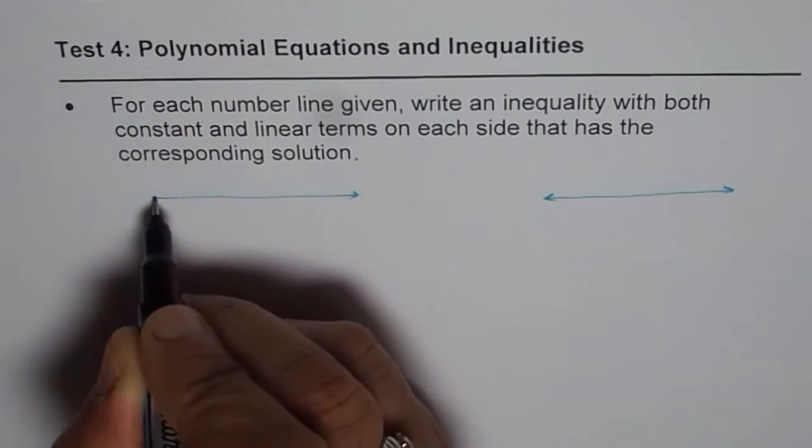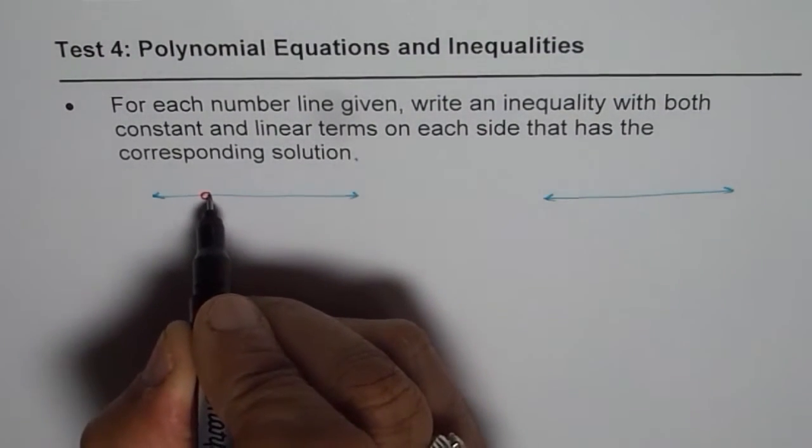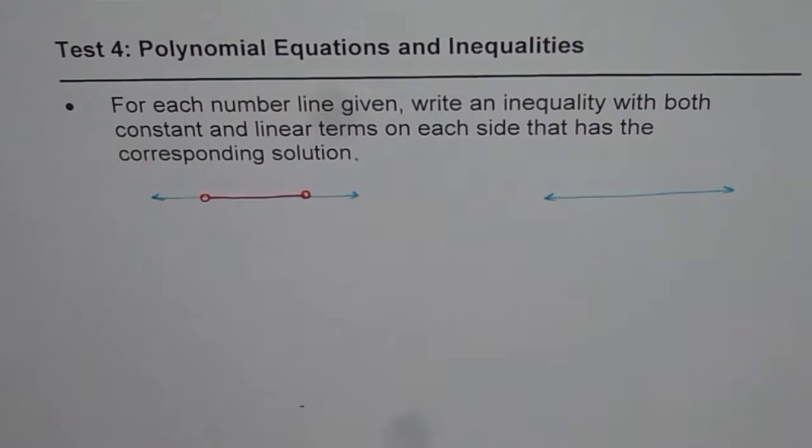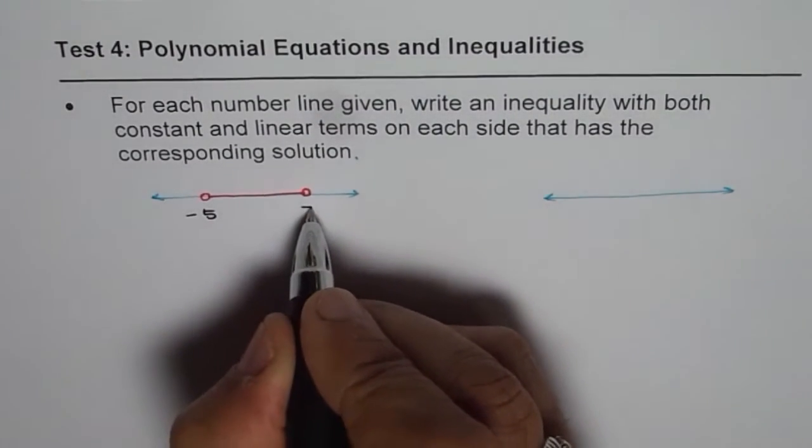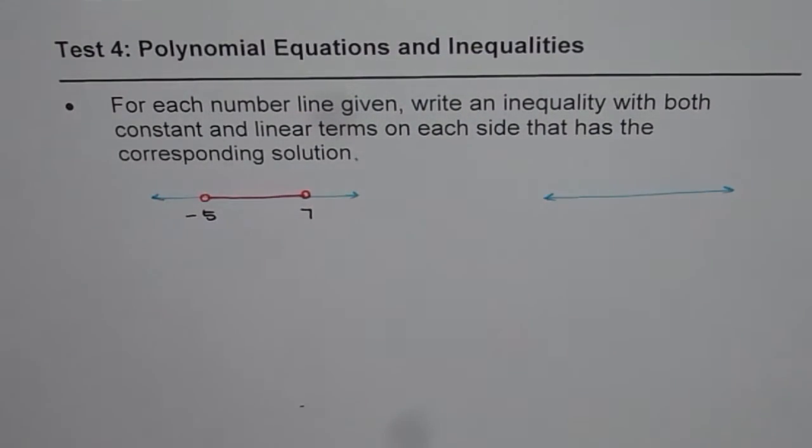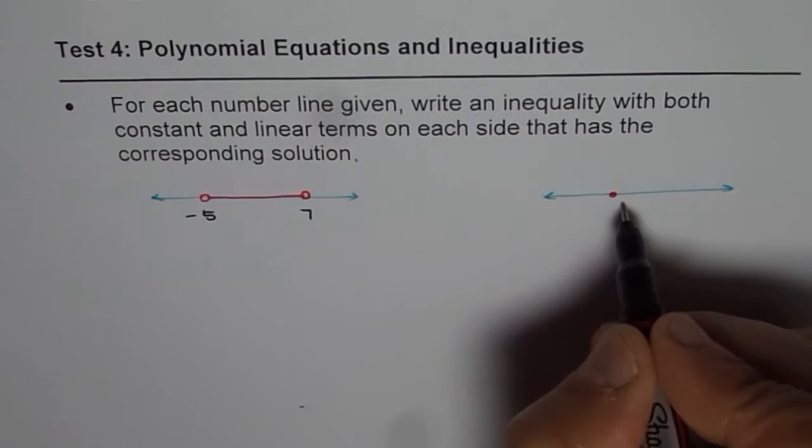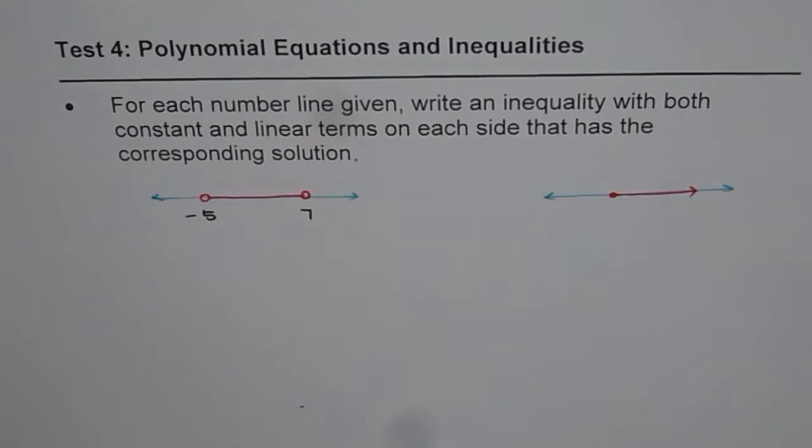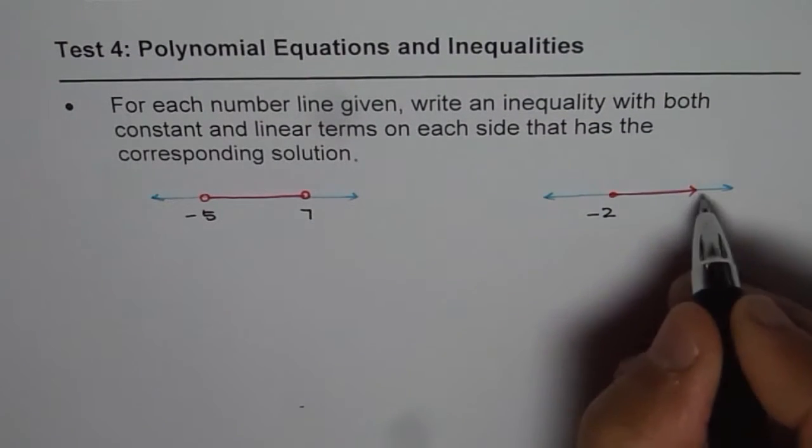One I will do first, then you can pause the video and answer the question. Let's say on this number line we have a solution which is kind of like this and these intervals are, let's say, -5 and 7. On the other line, I will take a solid value, that is filled in circle on one side. So, let's say this value is -2 and it goes forever.